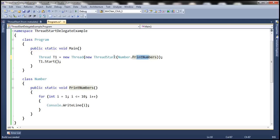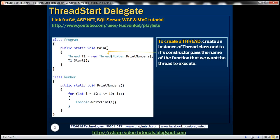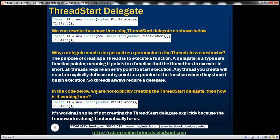Now coming to this example, this delegate is pointing to this function and we are passing that delegate as an argument to the Thread class constructor. So when this line is executed, this thread is going to execute PrintNumbers function. So now the obvious next question is why a delegate need to be passed as a parameter to the Thread class constructor.